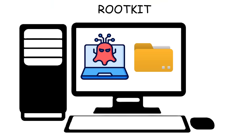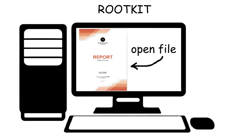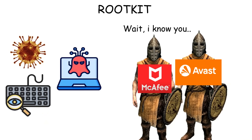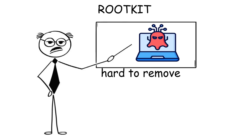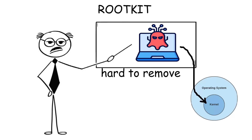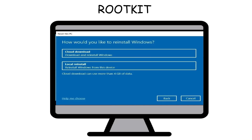A rootkit is a type of malware designed to hide its presence on a computer and can access everything. Once installed, it can also conceal other malware, such as viruses or keyloggers, from antivirus software. Rootkits are extremely difficult to remove because they often reside in the kernel — the core part of the operating system with the highest level of control. In extreme cases, reinstalling the entire operating system is the only fix.